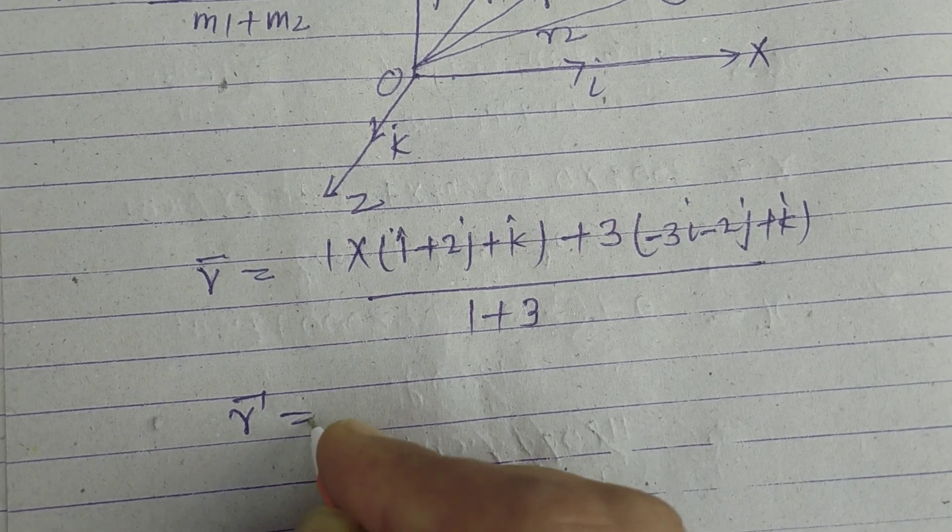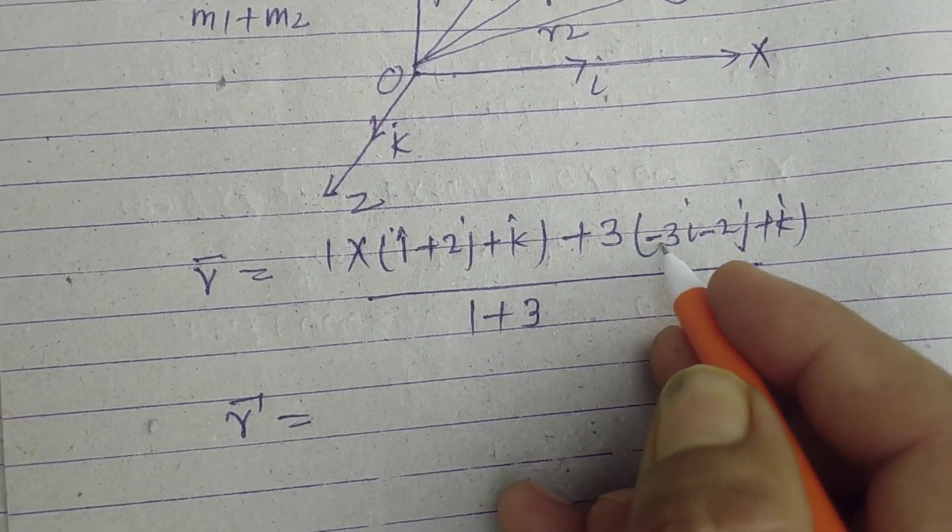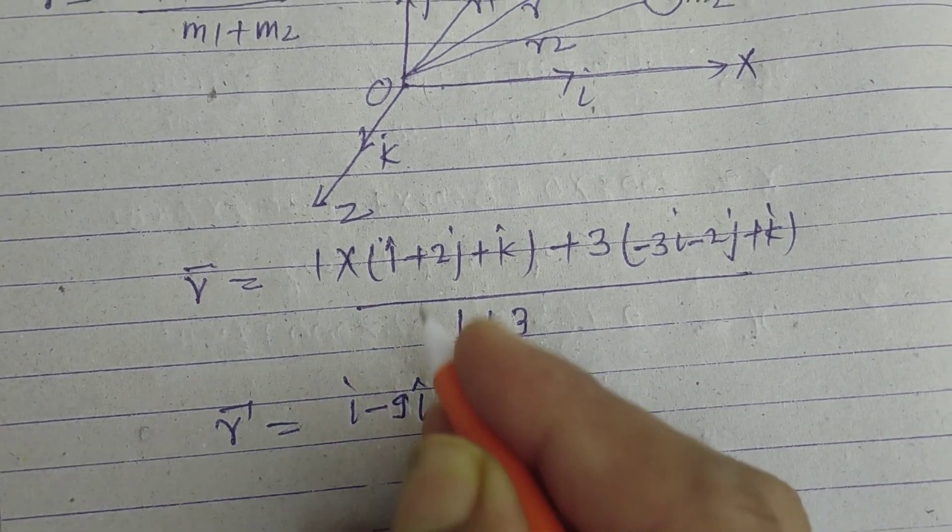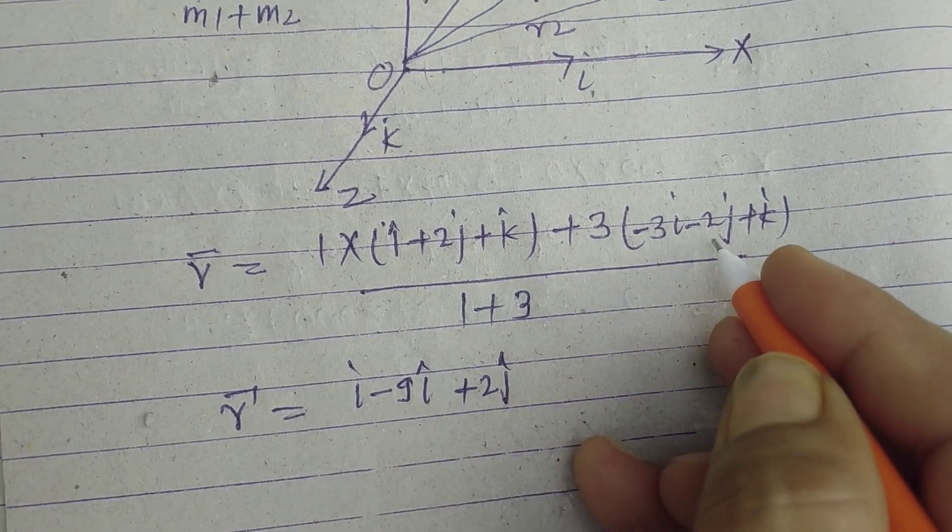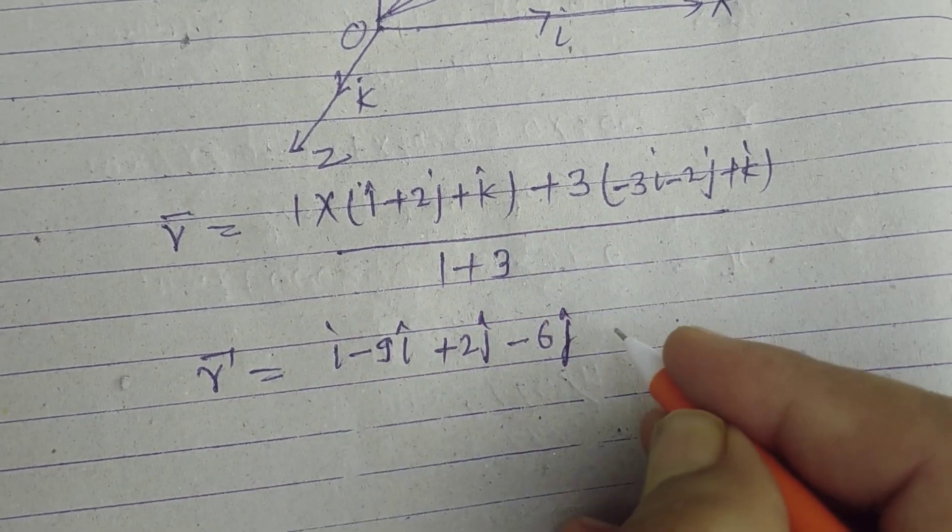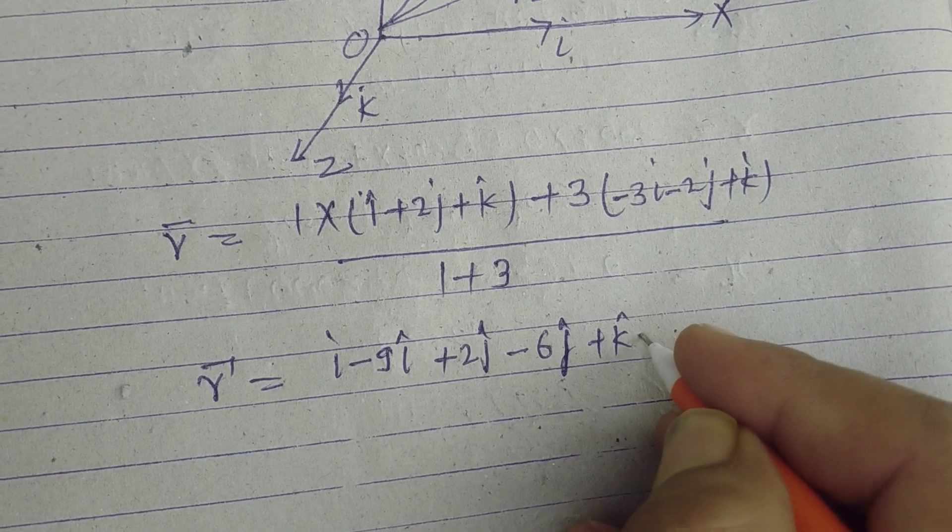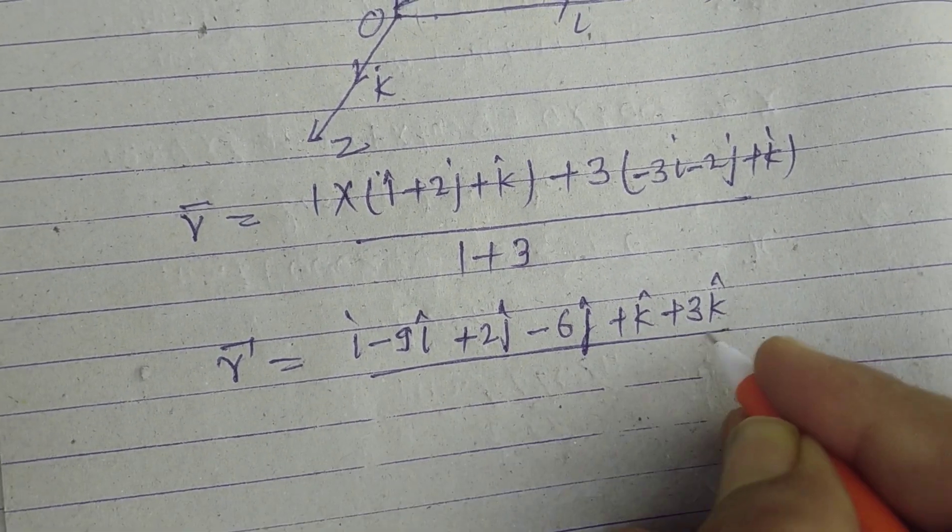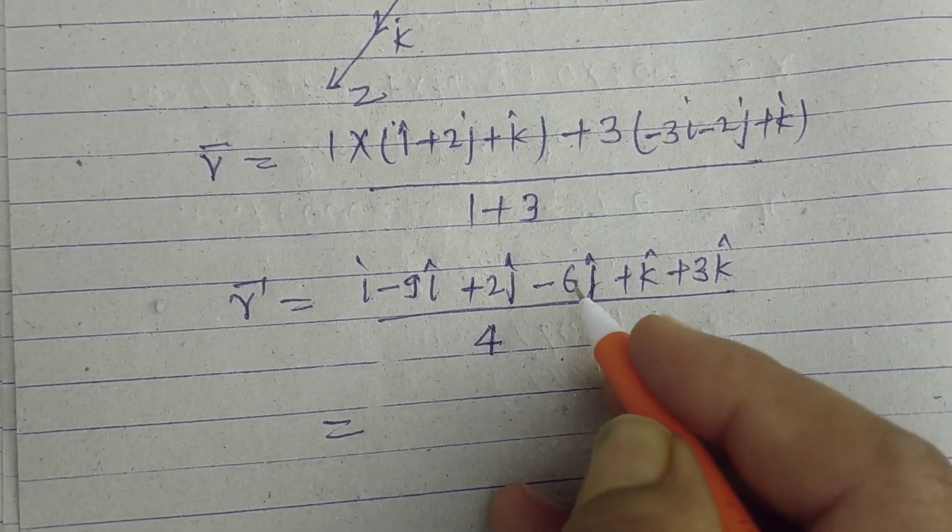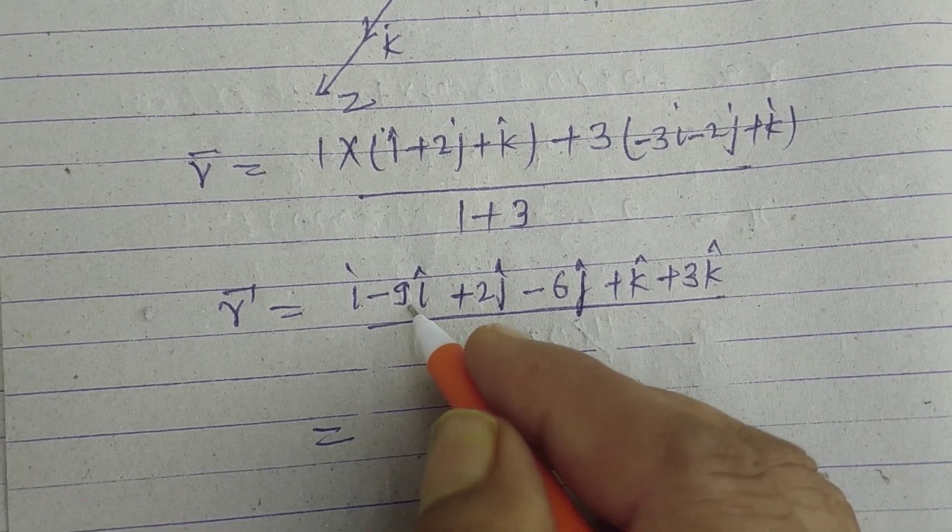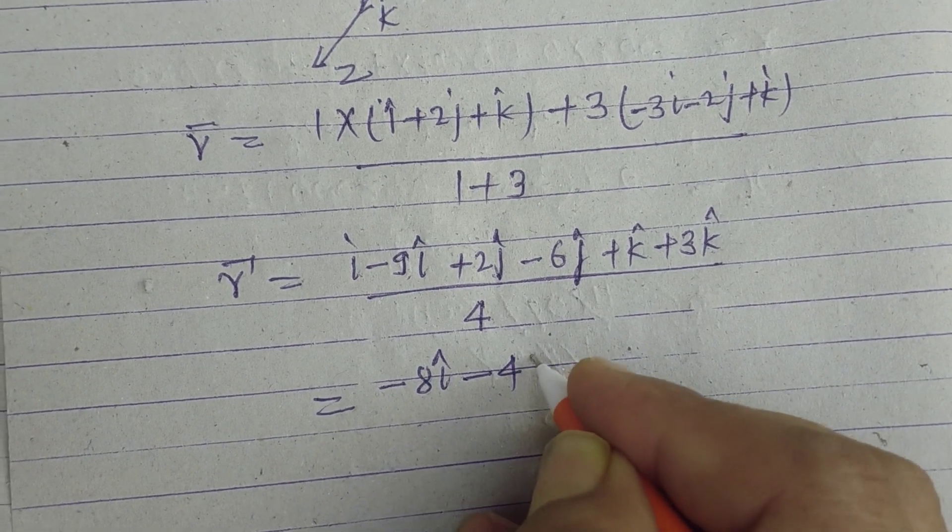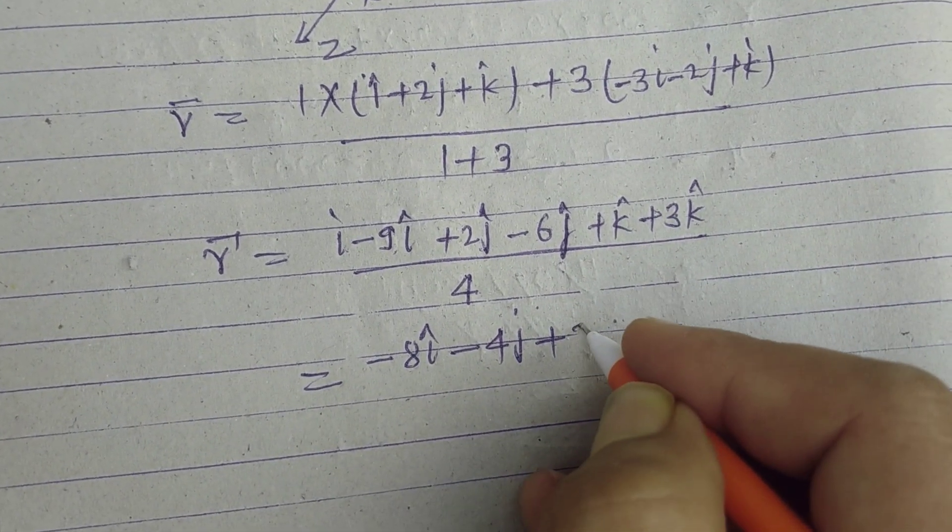This gives us i - 3i in i-direction, which is -2i. For j: 2j - 6j gives -4j. For k: k + 3k gives 4k. So the numerator is -2i - 4j + 4k.